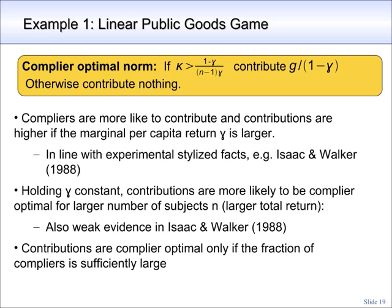Let's look at the comparative statics of contribution levels. If the marginal per capita return gamma is larger, then compliers are both more likely to contribute, and if they contribute, their contribution levels are larger. The result that contributions are increasing in the marginal per capita return is quite a robust stylized fact in experiments. For a seminal paper, take a look at Isaac and Walker, 1988.